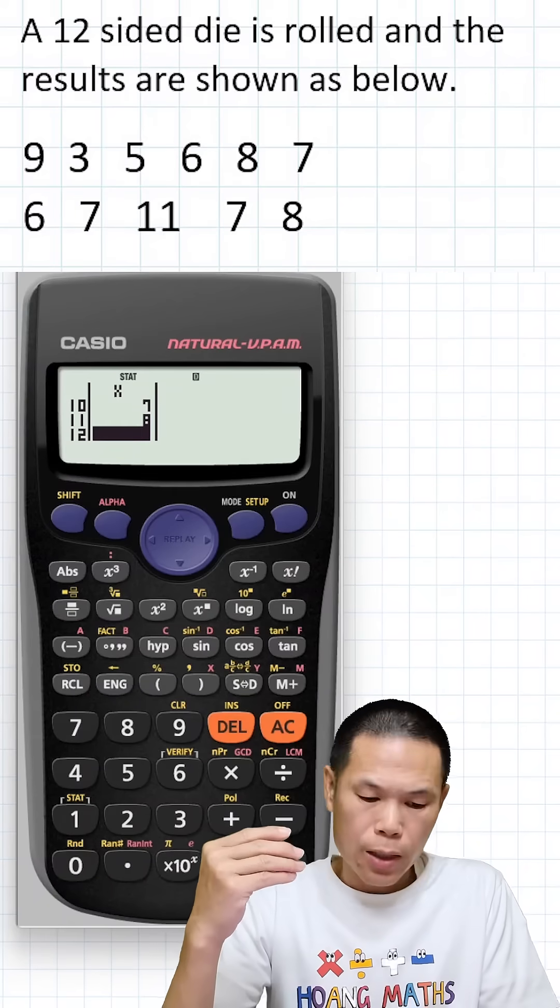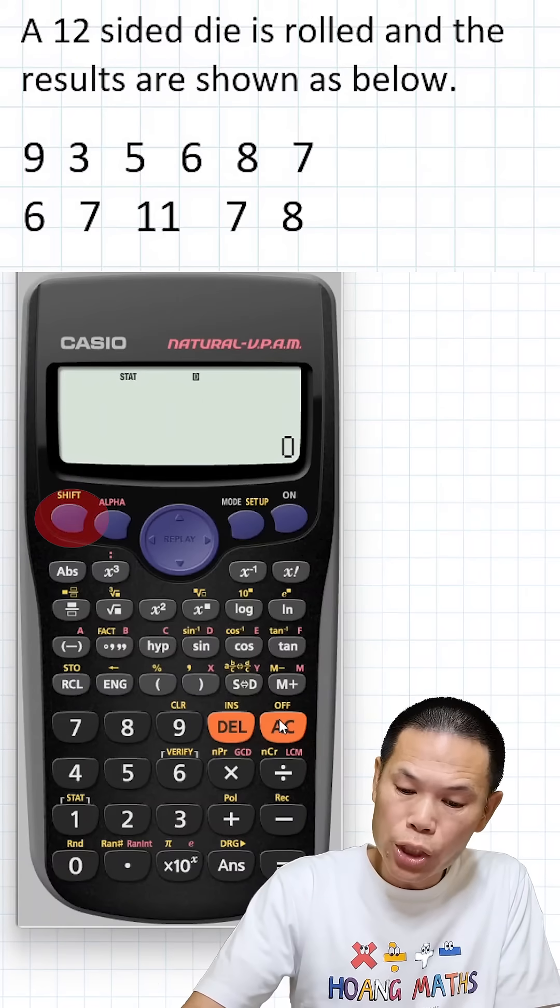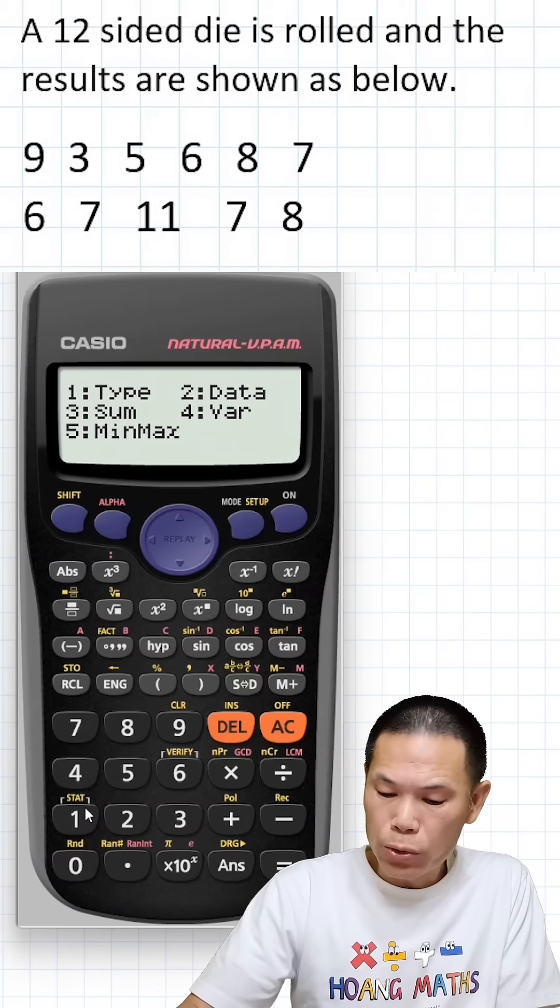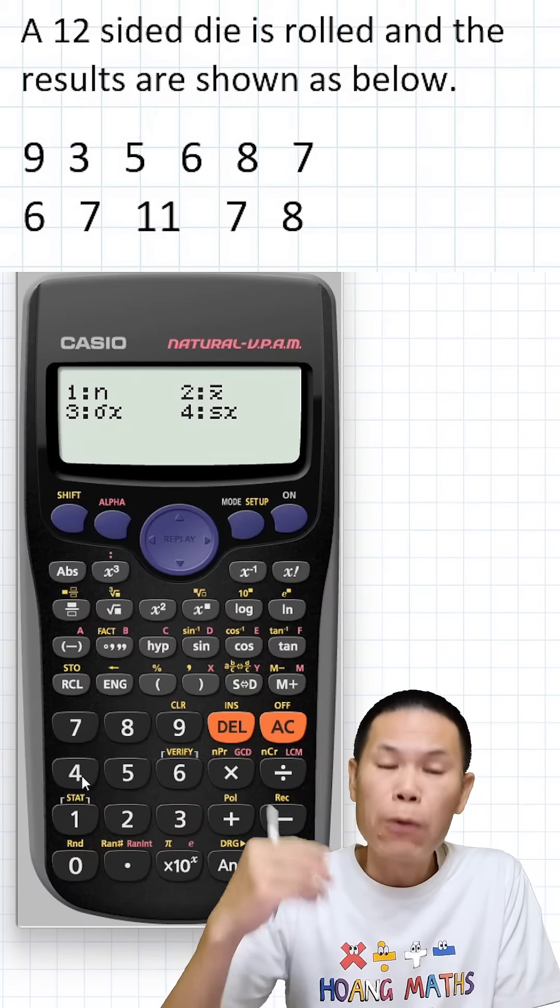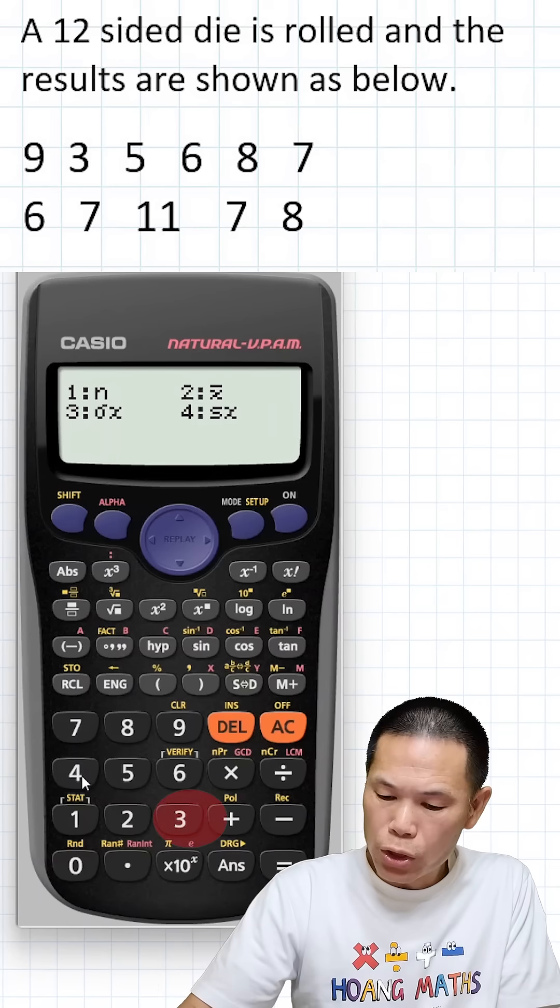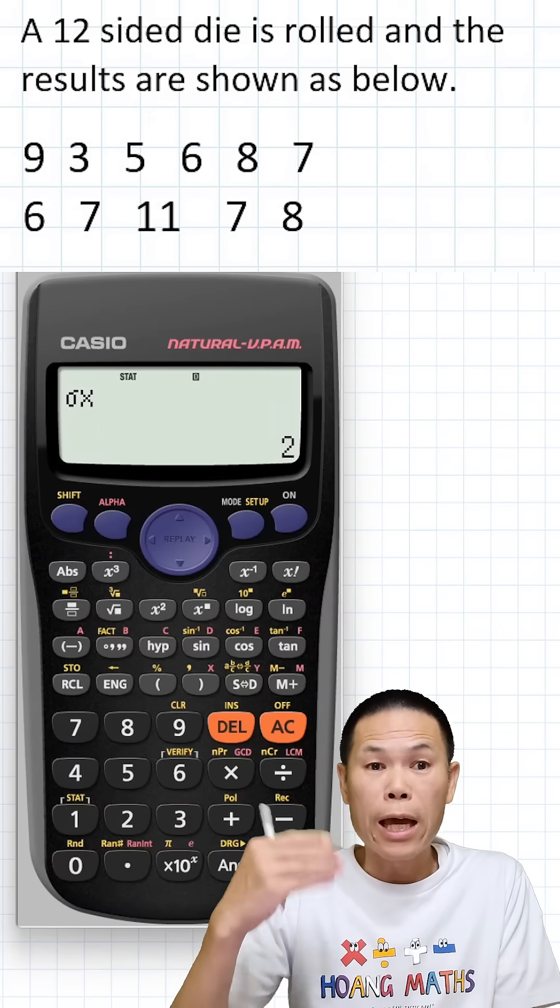That's it. Now what we do is clear the screen first, so we go shift, option one, and then under variable, which is option four. We need to choose option three because it is a population. Don't forget we need to put equal.